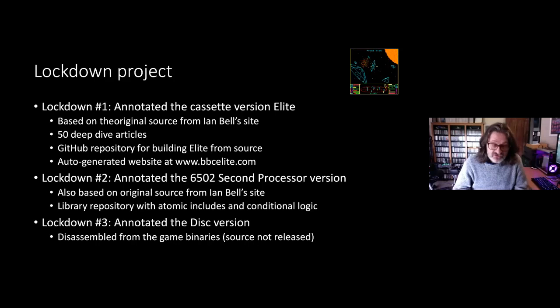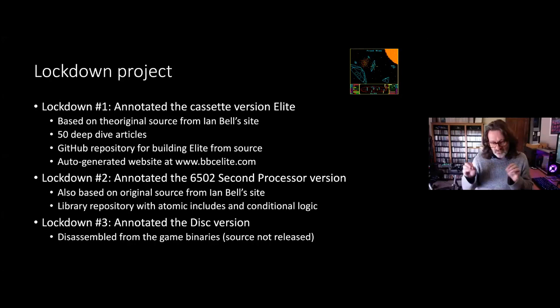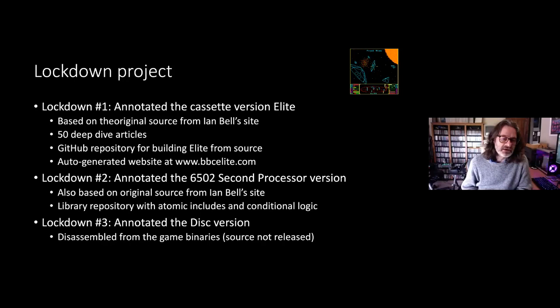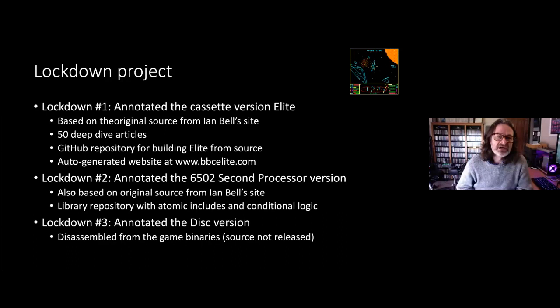Along comes lockdown two just before Christmas, and that seemed like a good time to grab the source for the 6502 second processor version of Elite, which is also available on Ian Bell's site. I broke it all up into a whole library repository which enables me to generate multiple versions of the source. I've just finished and launched this week the disk version — a big library project containing all of the various sources mashed together. The website is the best place to start if you're interested.